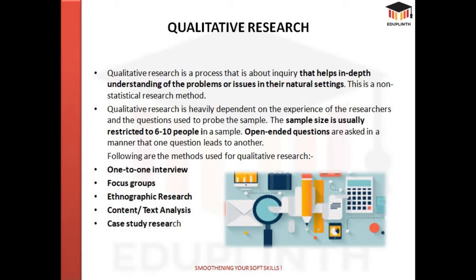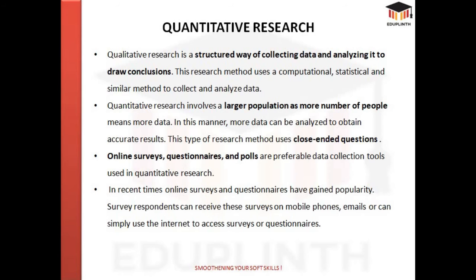Different methods for qualitative research include one-to-one interviews, focus groups, ethnographic research, content or text analysis, and case studies. Quantitative research, on the other hand, is a structured way of collecting and analyzing data to draw conclusions. It uses computational, statistical, or similar methods to collect data, has a larger population for sample size than qualitative research, and uses close-ended questions. Examples include online surveys, questionnaires, and polls — which have really gained popularity recently, with respondents receiving surveys on mobile phones, emails, or via the internet.